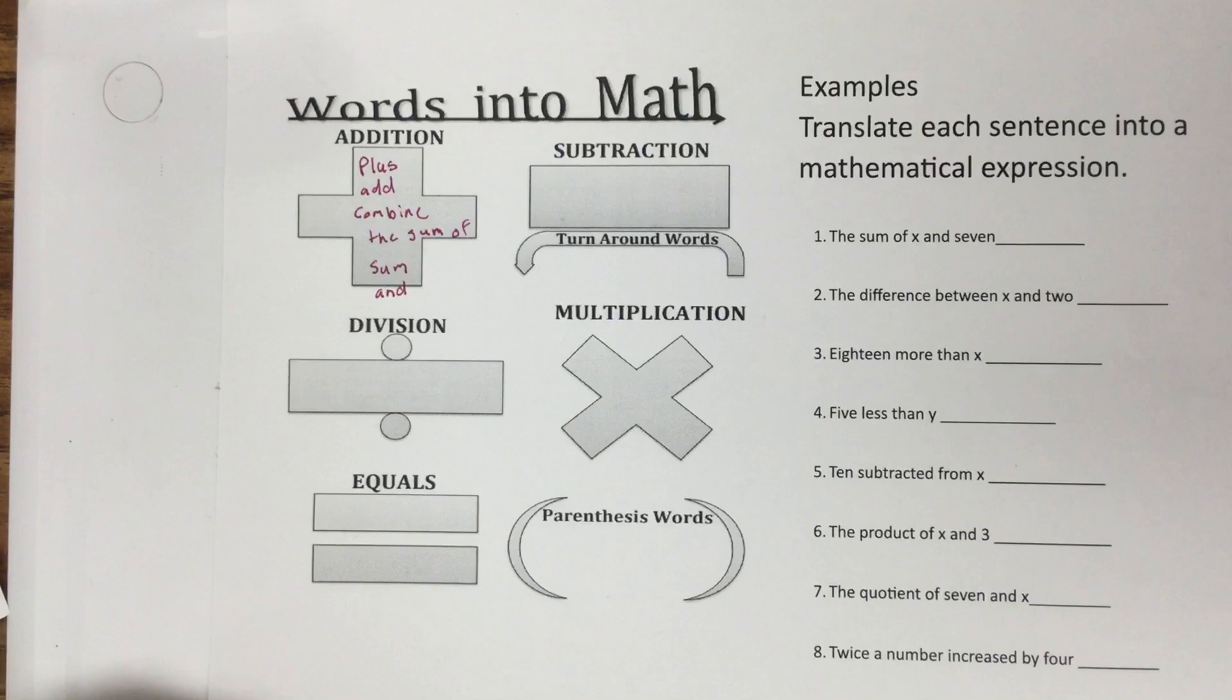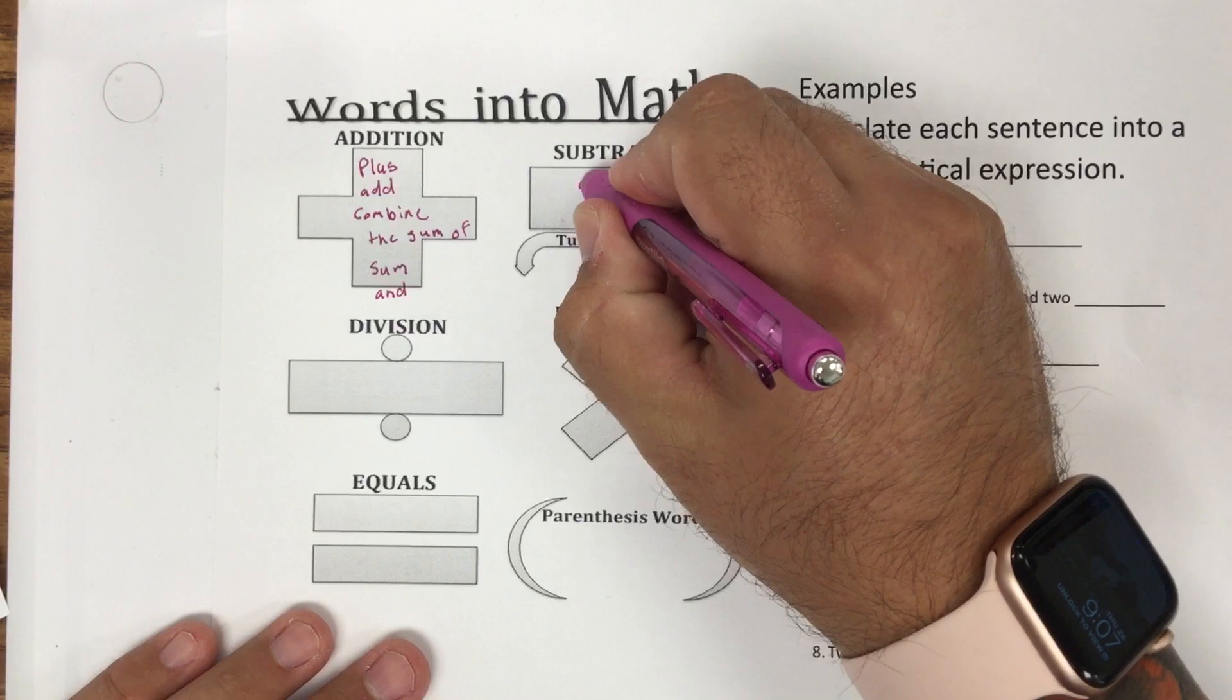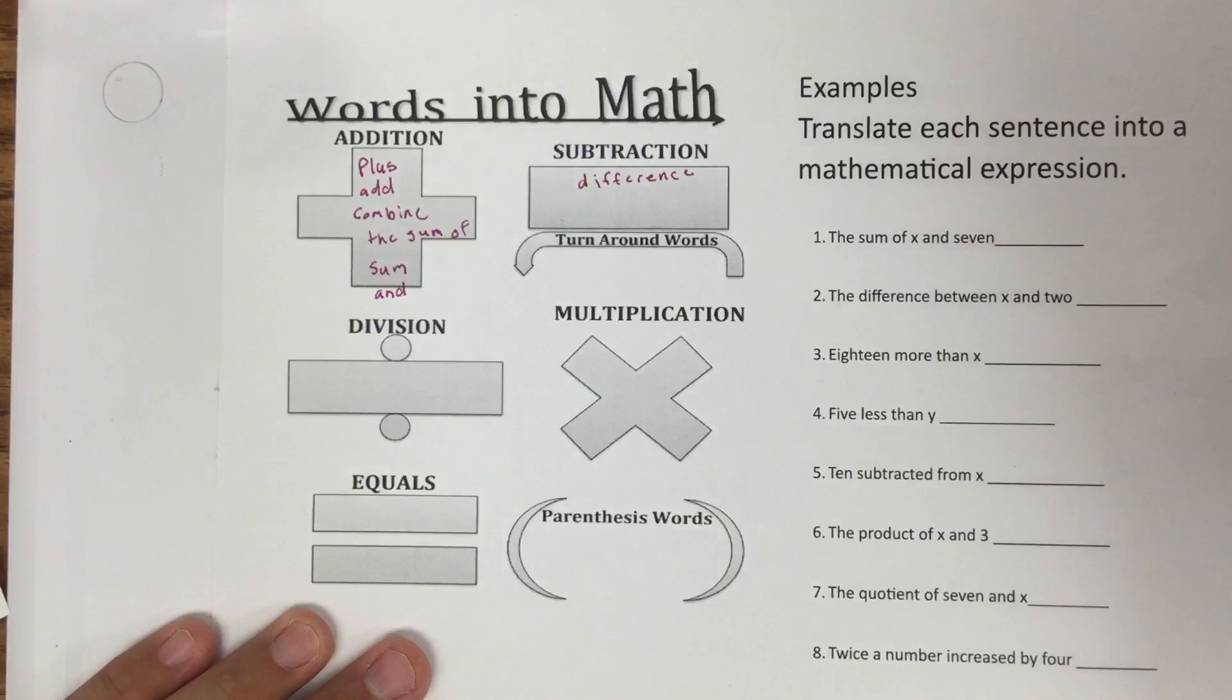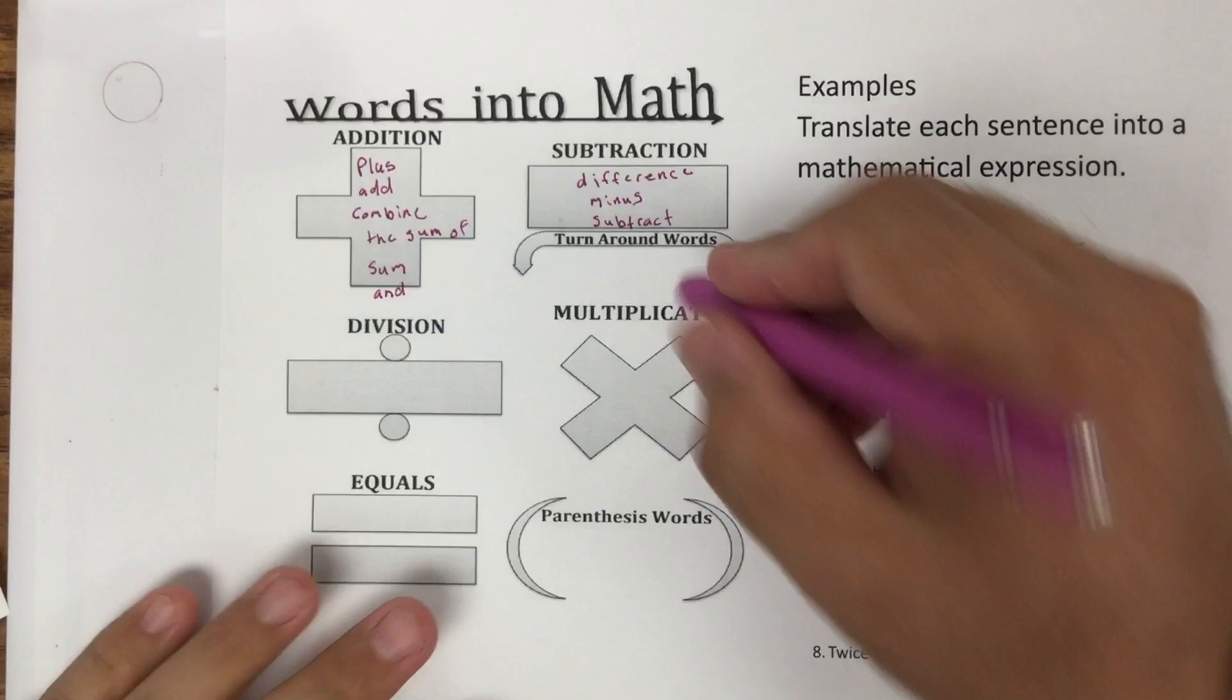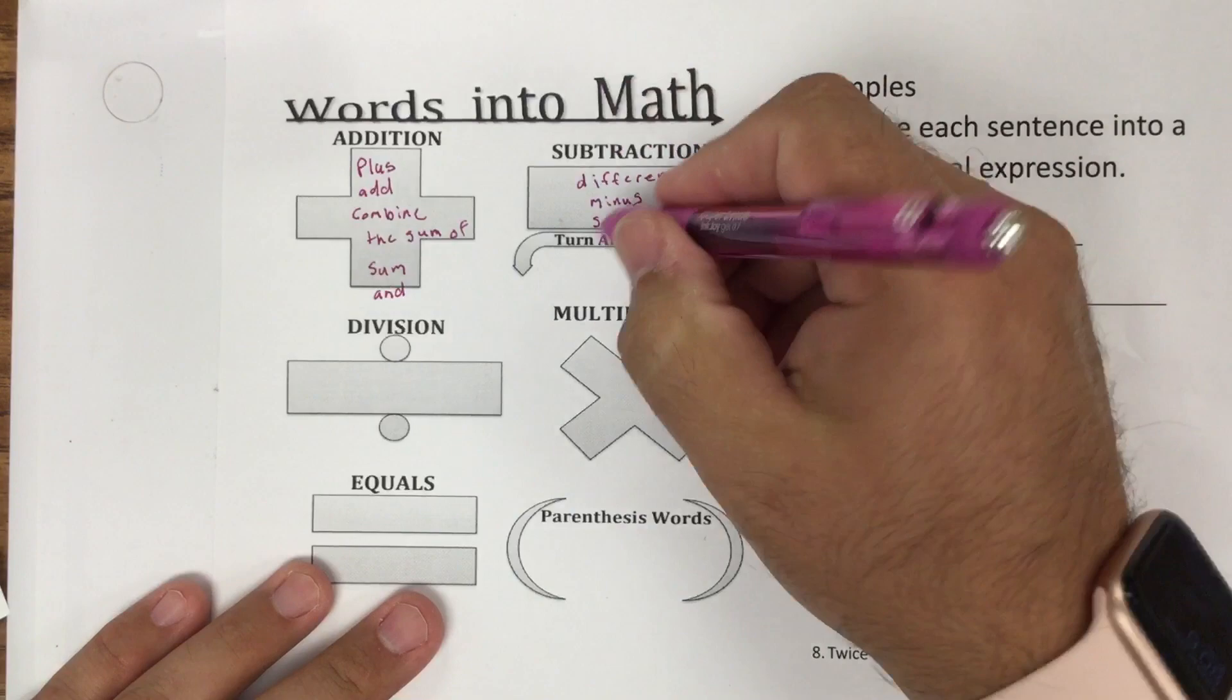Subtraction. I think some of the words for subtraction - there's going to be plenty of words on here. Difference, I think that's the first word that probably comes into people's minds, maybe minus. Six minus something. And then the keyword in subtraction: subtract. You might even see less than. Less than's a keyword, but less than, we're going to talk about that here for turnaround words.